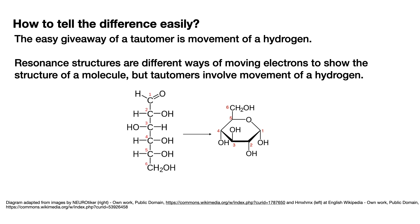Here we have two forms of this monosaccharide: the straight chain and the ring structure. We're essentially taking the oxygen on carbon 5 on that alcohol, and connecting it to carbon 1 to form a ring structure. If you look at carbon 5 on the left structure, that oxygen has a hydrogen connected, but on the same oxygen on the ring structure, that hydrogen is gone.